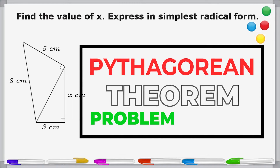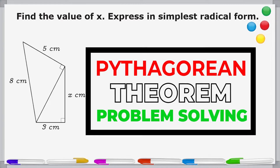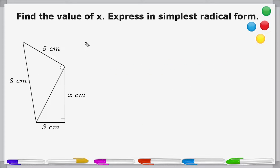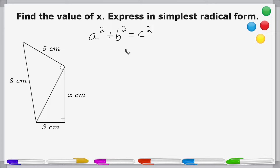Hey, this is Mr. Mason, and what we're going to do in this video is use the Pythagorean Theorem to solve a problem involving two right triangles. To use the Pythagorean Theorem, one thing we have to remember is that to find the length of any one of the three sides of a right triangle, you need to know the length of two of the three sides.